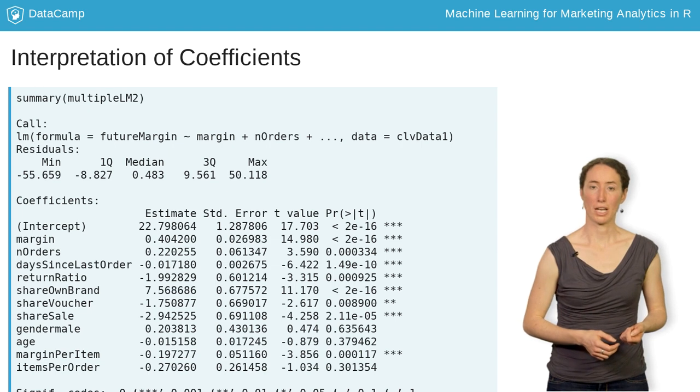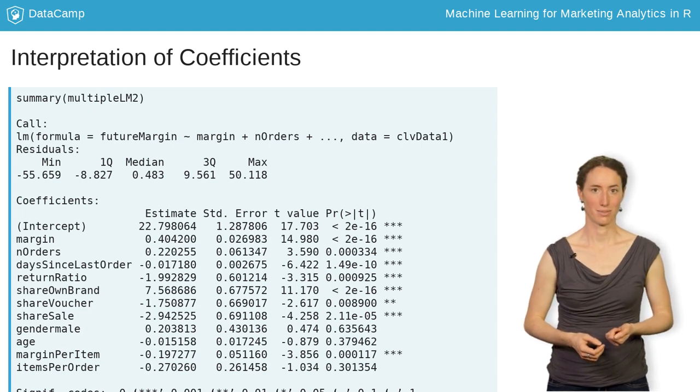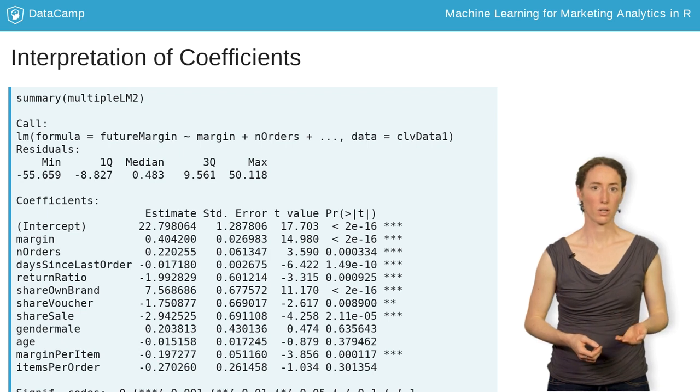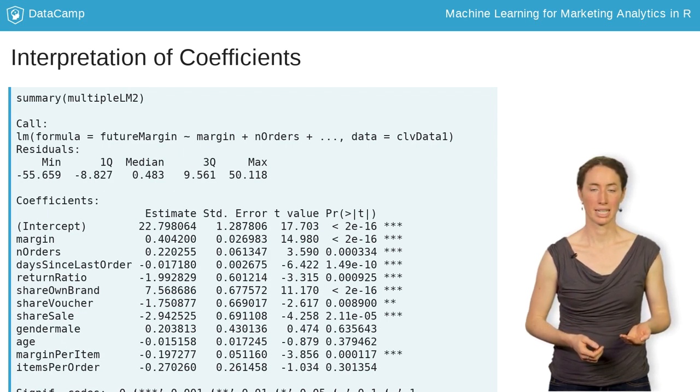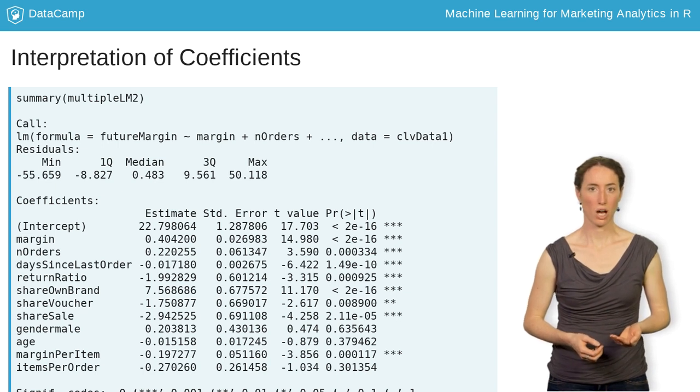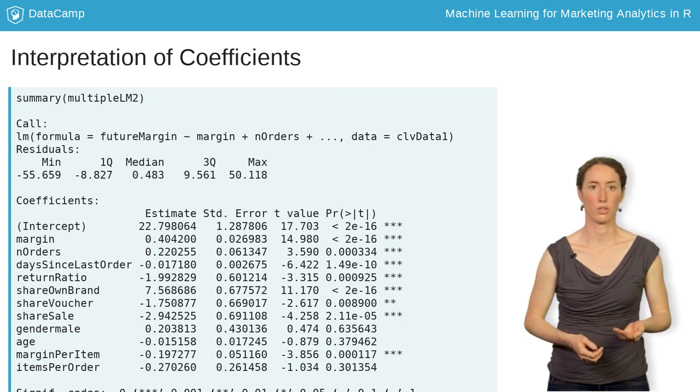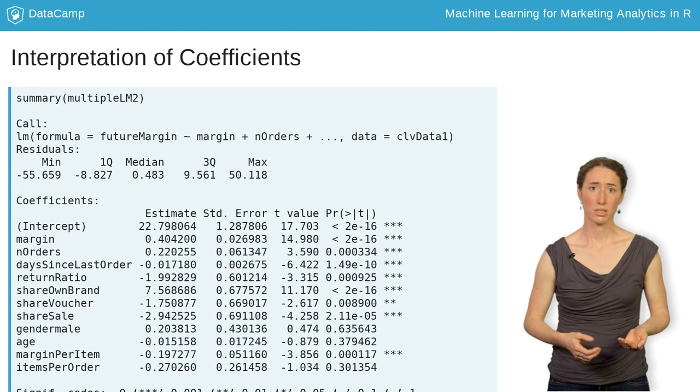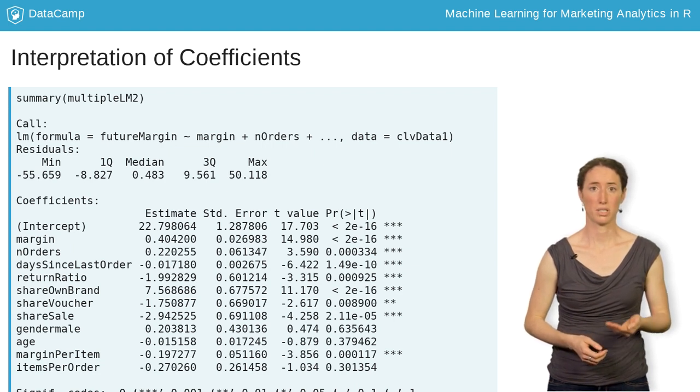Let's also look at the coefficient significance. By default, a t-test about whether or not the respective coefficient is 0 is conducted. If the p-value in the last column is smaller than 0.05, we can conclude that coefficient to be significantly different from 0 at the 0.05 significance level.